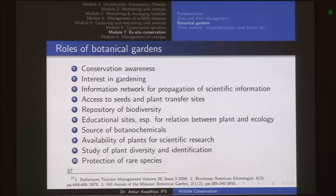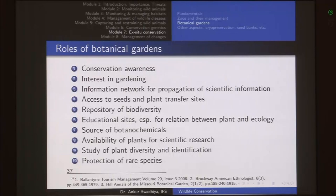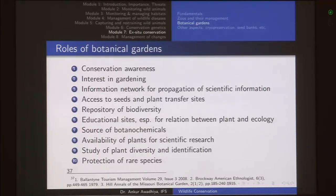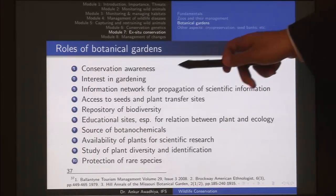When we talk about biodiversity, we as students of conservation know what biodiversity is, how many kinds of species there are, and that we are losing as many as 27,000 species per year just from our tropical forests. But for the general public, how do we tell them there is such a huge diversity of plant and animal life? Which is why zoos and botanical gardens become very important — they are very important for conservation awareness.